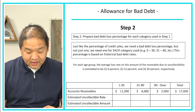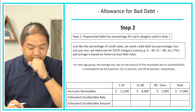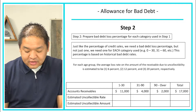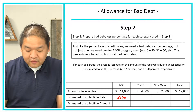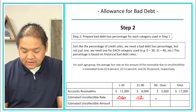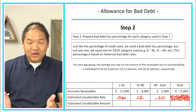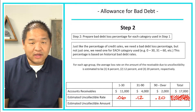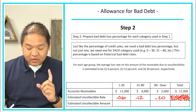In step number two, we're going to apply the percentages to the aging brackets. For one through 30 we're using 6%, so I'll enter 0.06. For 31 to 90 we've got 12%, so 0.12. And for over 90 we have 20%, so 0.20. Nothing goes in the total percentage box — we don't add across, because 38% doesn't mean anything in this problem. That's what step number two looks like.